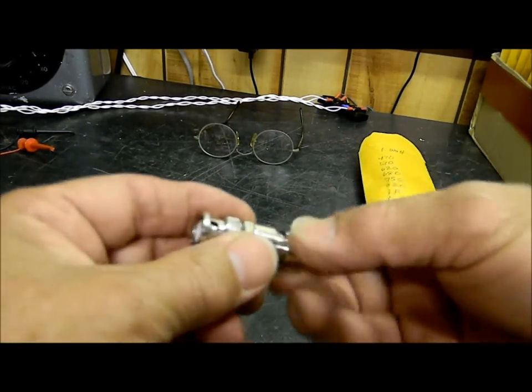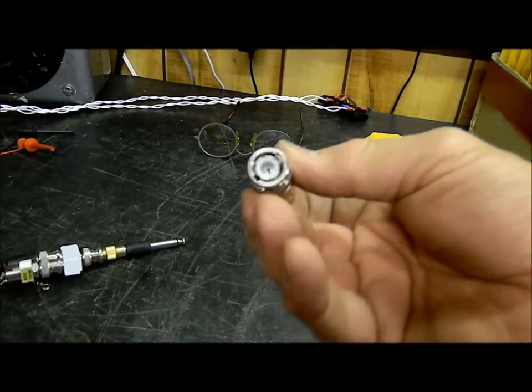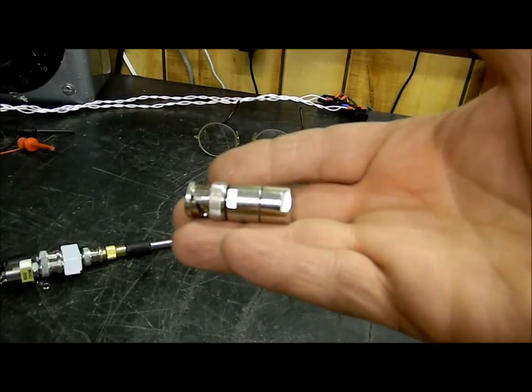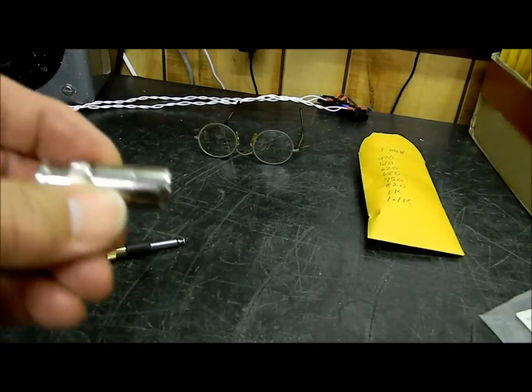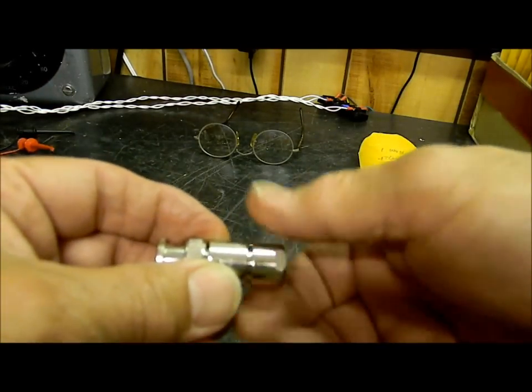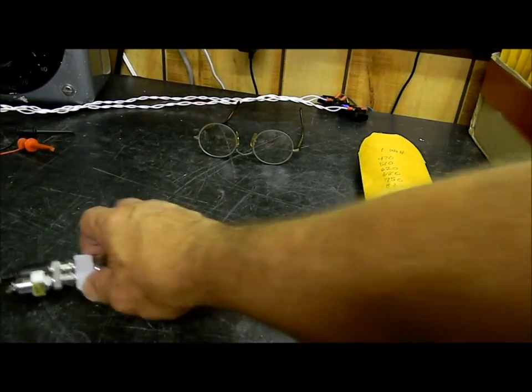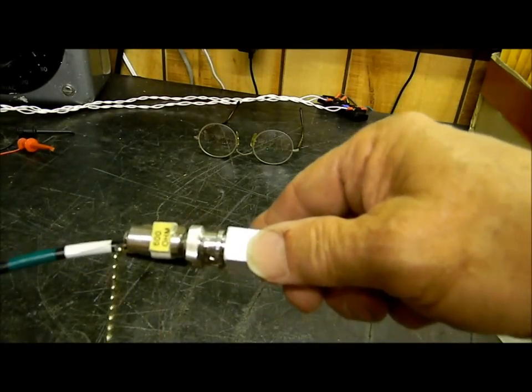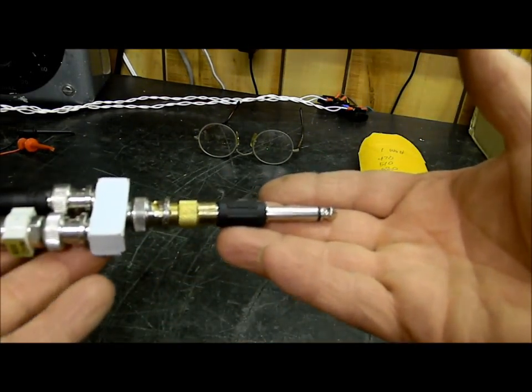This is a standard BNC terminator. They come in generally 50 ohm and 75 ohm. What we need in using audio test equipment like I have right here is to always terminate my output, which is the input to the device that I'm working with, with a 600 ohm load.